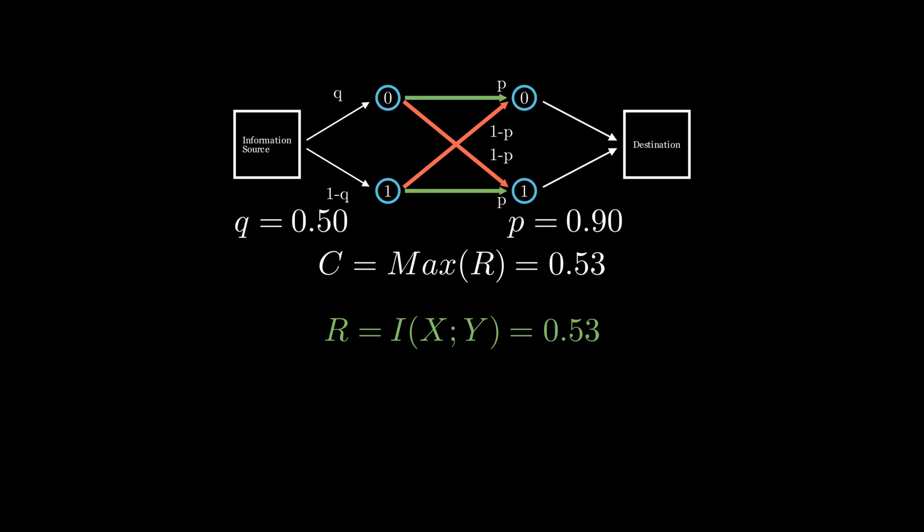The notion of a capacity of a noisy channel may seem uncomfortable at first. Why would we define such a metric, since the output is never fully certain?